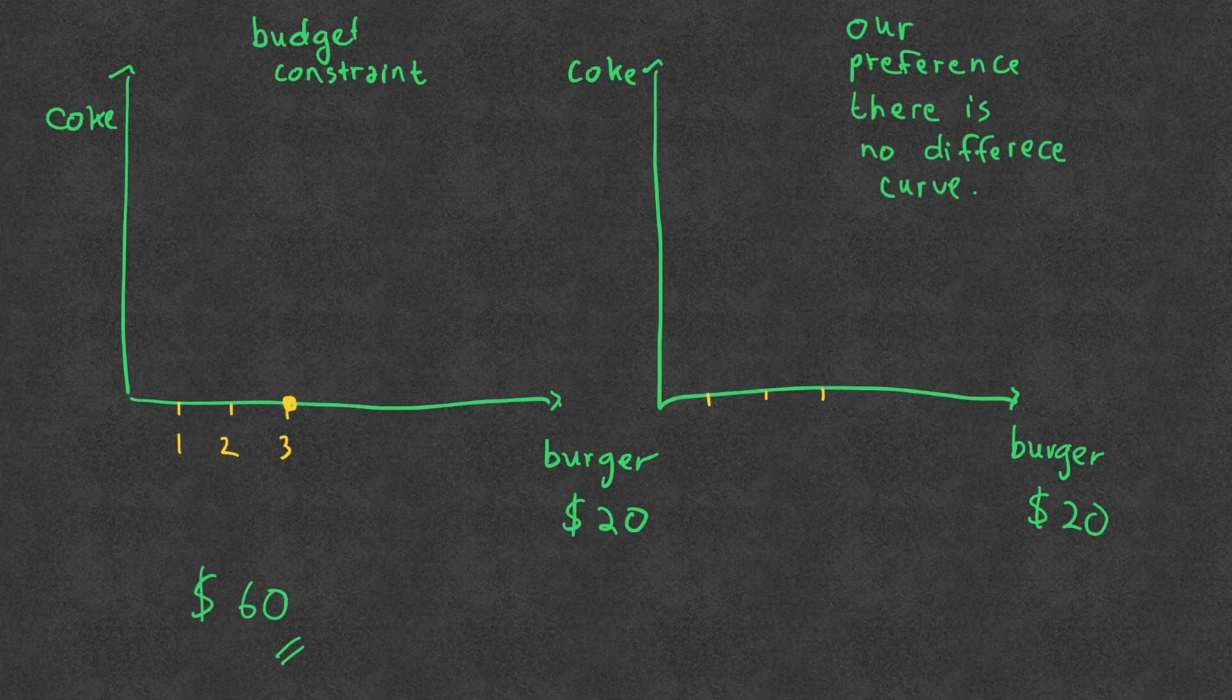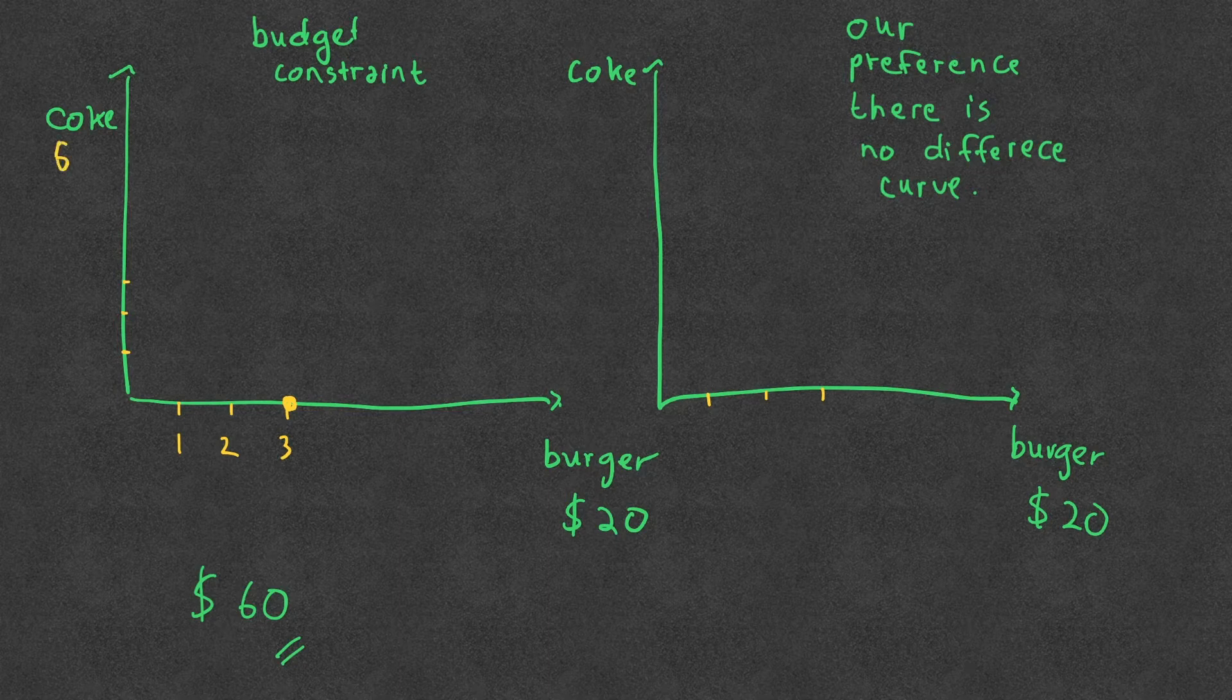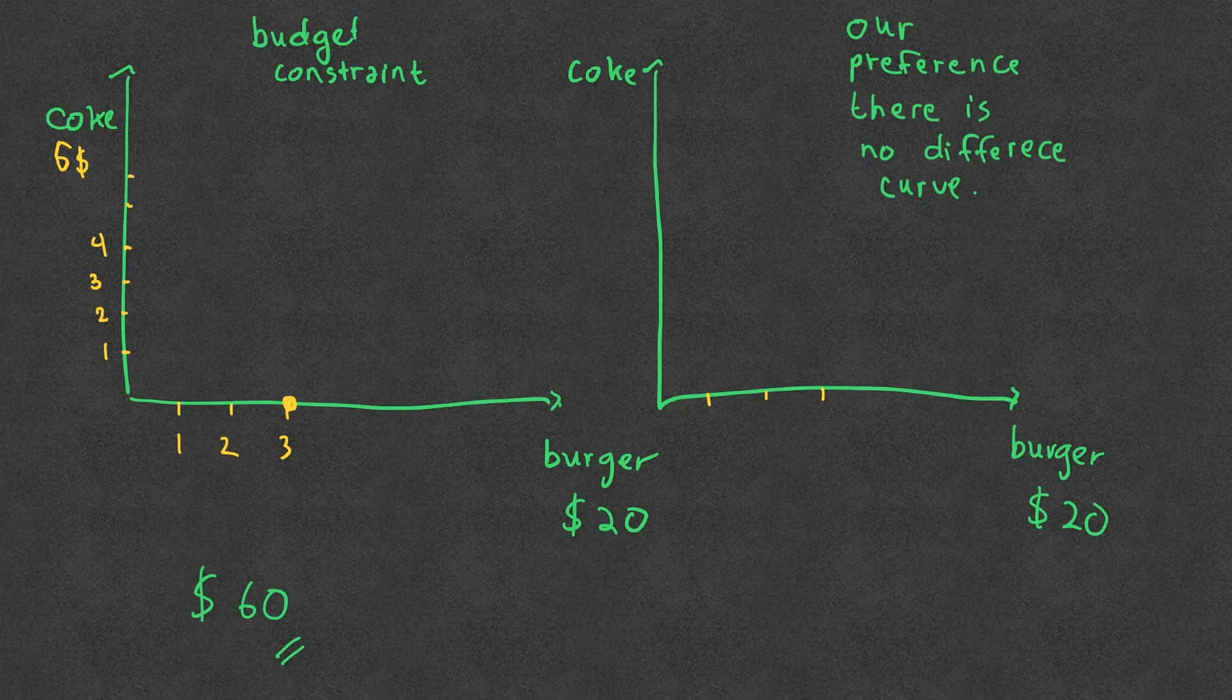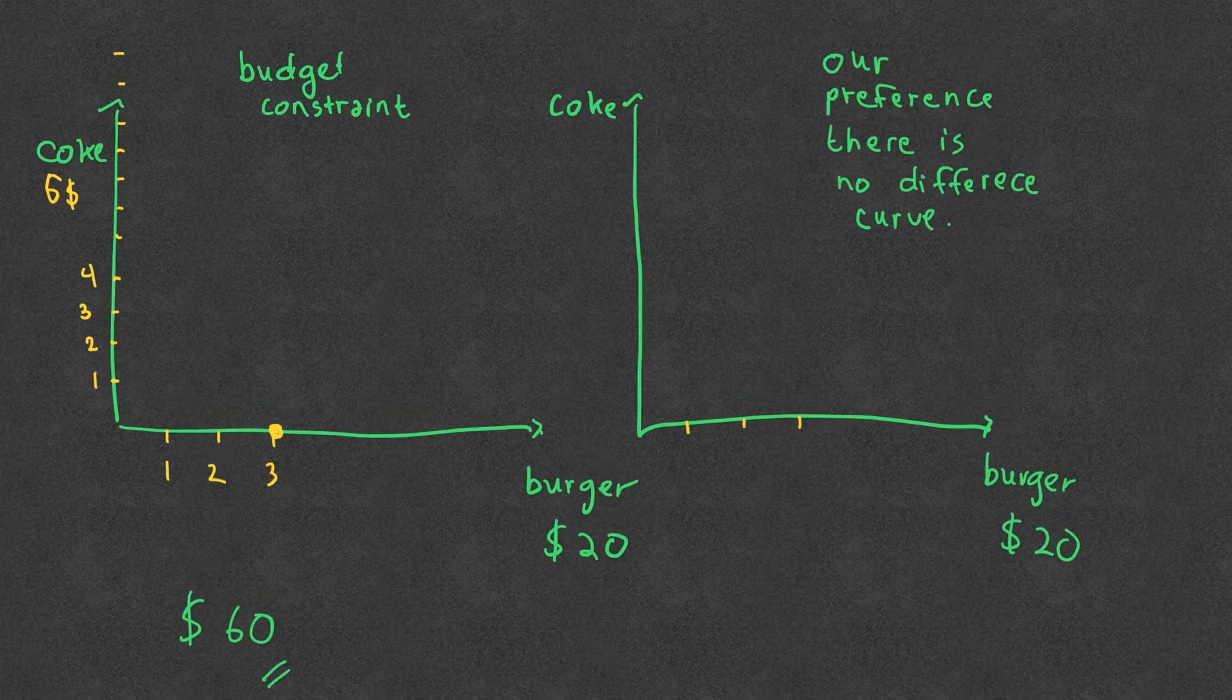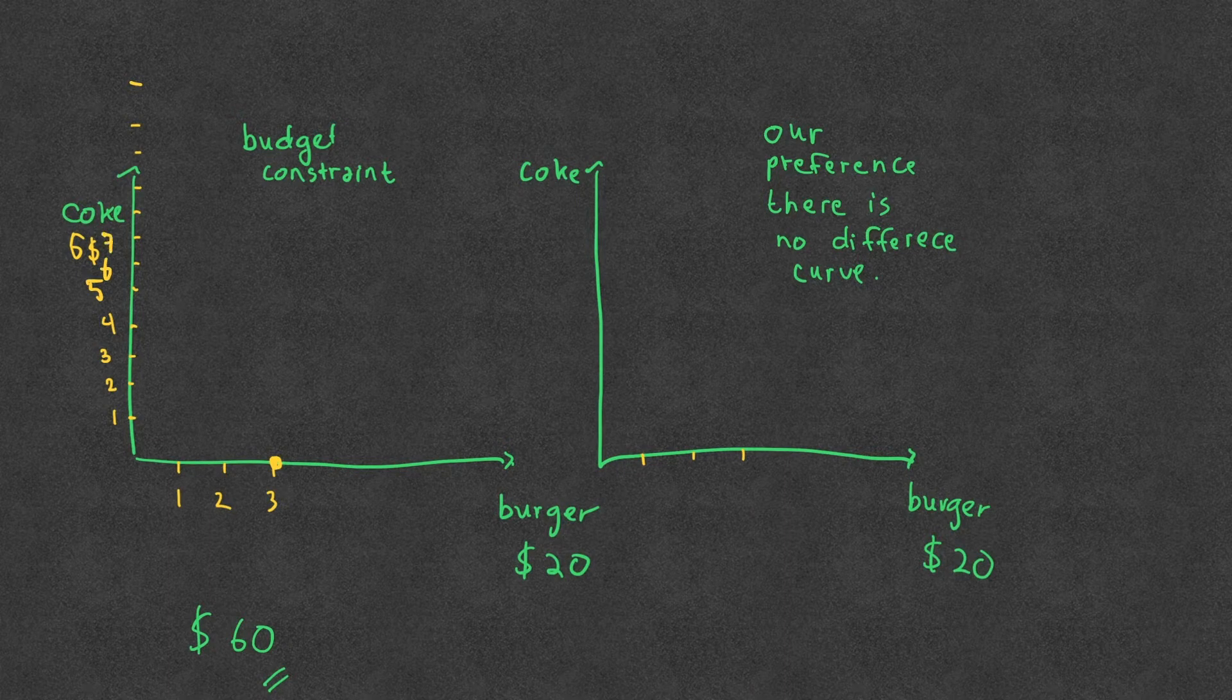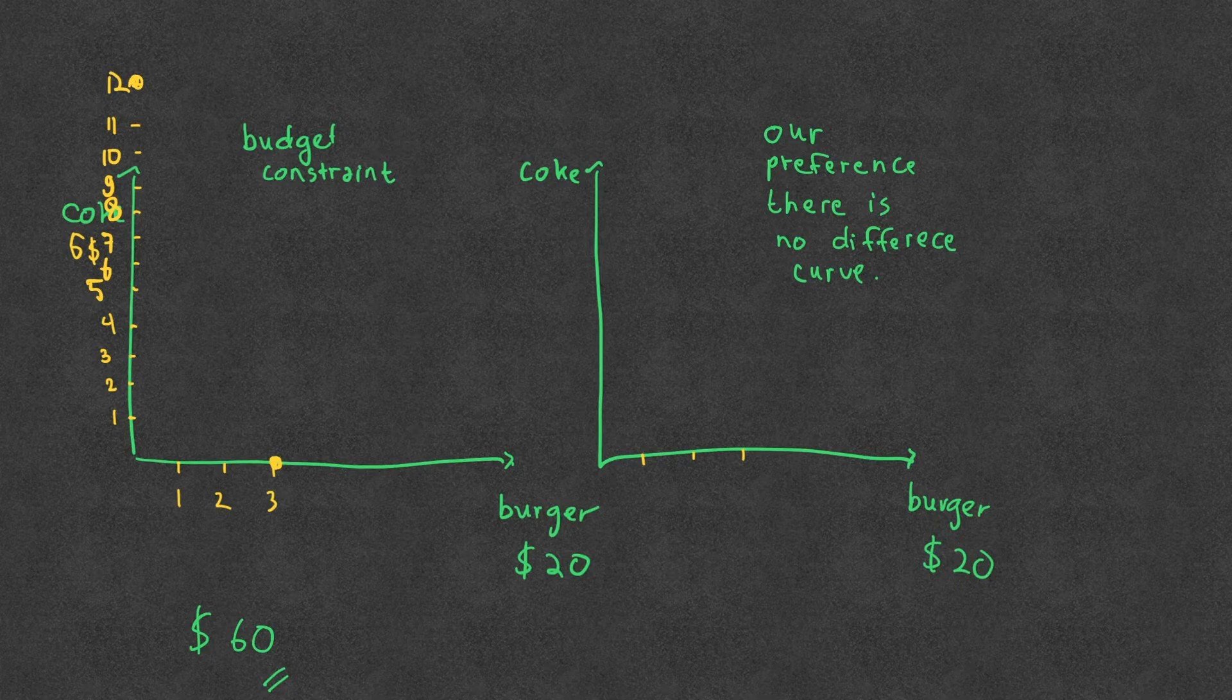And for $5 of coke, I'm afraid we need to make until 12 which is quite a lot. So let's say one, two, three, four, five, six, seven, eight, nine, ten, eleven, and twelve. And let's draw a line here.